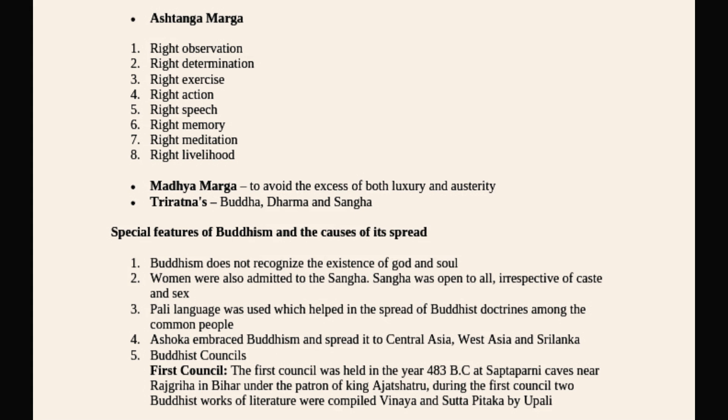The first Buddhist Council was held at Saptaparni Caves near Rajgriha in Bihar, under the patronage of King Ajatashatru. During this council, two works of Buddhist literature were compiled by Upali: Vinaya Pitaka and Sutta Pitaka.